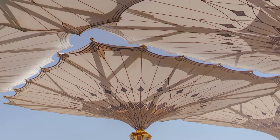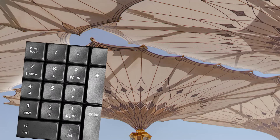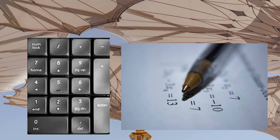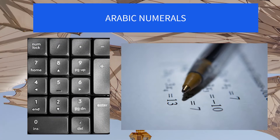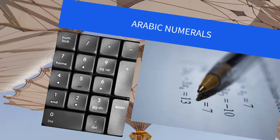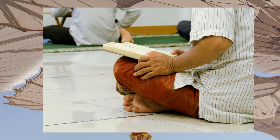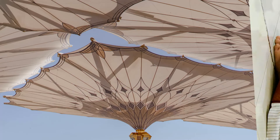Arabic has big influence all over the world. The numbers 0 to 9 which most of the countries use today are actually Arabic numerals. While most of the languages are written and read from left to right, the Arabic language is written and read in the right to left form.